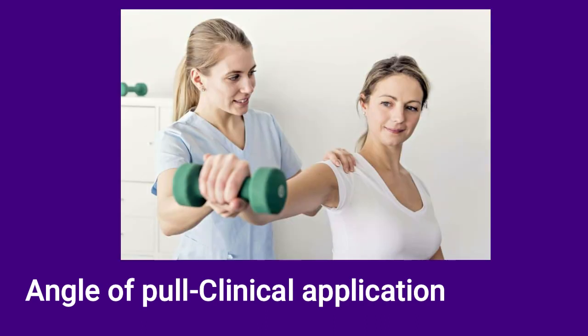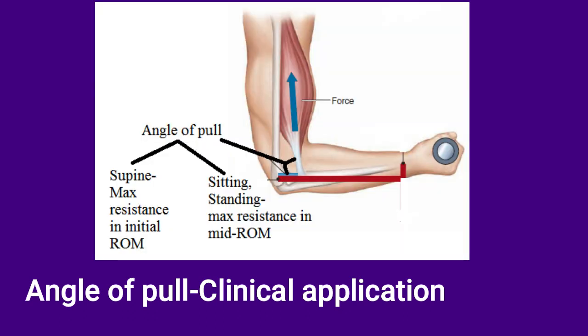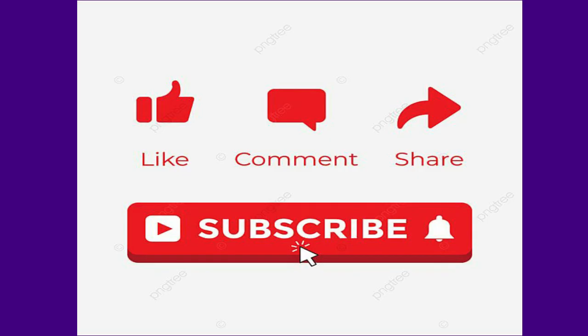Angle of pull is also a useful concept when strengthening a muscle using external weights. With free weights like sandbags or dumbbells, the maximal resistance occurs when the pull of the weight is perpendicular to the ground, regardless of the limb's position. For example, when your patient is in supine, they get maximum resistance when the elbow moves from full extension to flexion, i.e., the initial range of motion. Whereas in positions like sitting, the weight is perpendicular to the ground when the elbow is 90 degrees flexed, so the patient gets maximum resistance at mid-range of motion. With that, let's wrap up for today. I hope you've learned today's concepts — if you did, don't forget to like, comment, and share it with other physios. Thank you for watching.